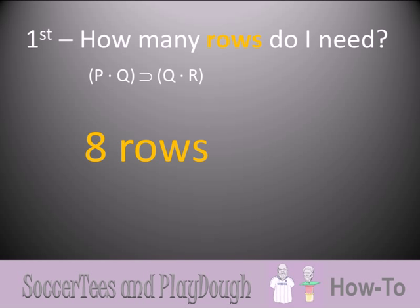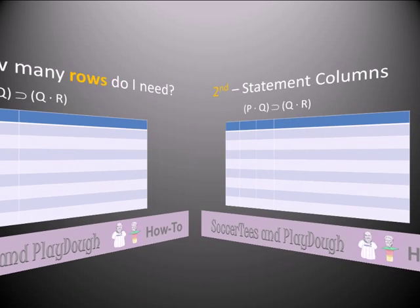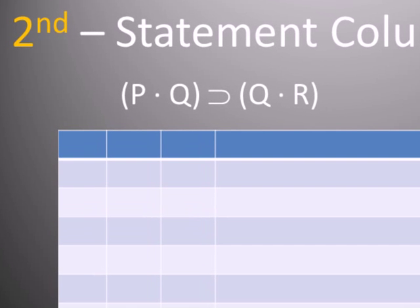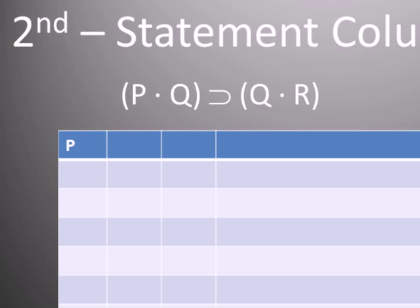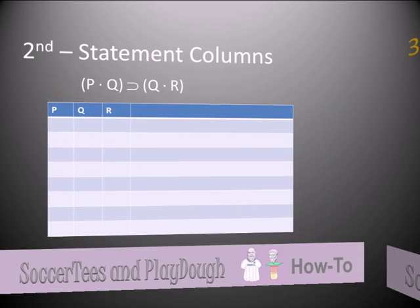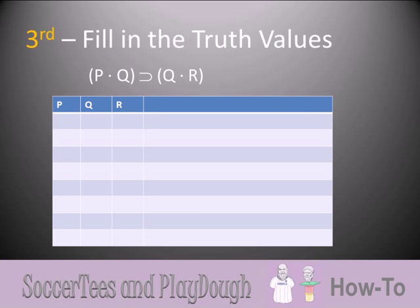Here are the eight rows. Next, we need to create statement columns for each of the statement letters. They simply go across the top as P, Q, R, and it's best to put them in alphabetical order.